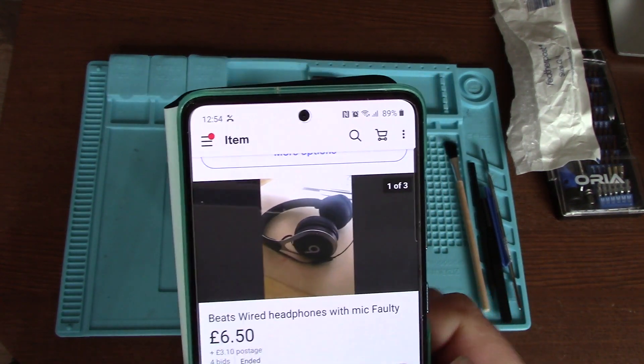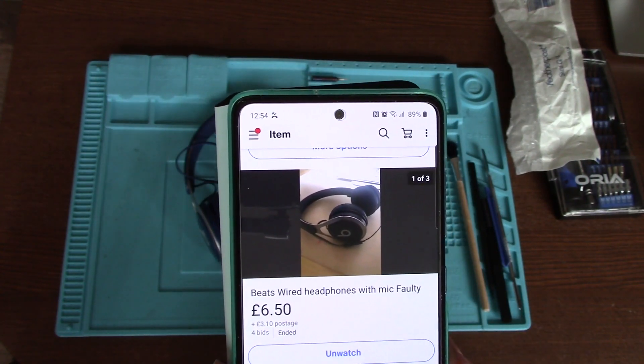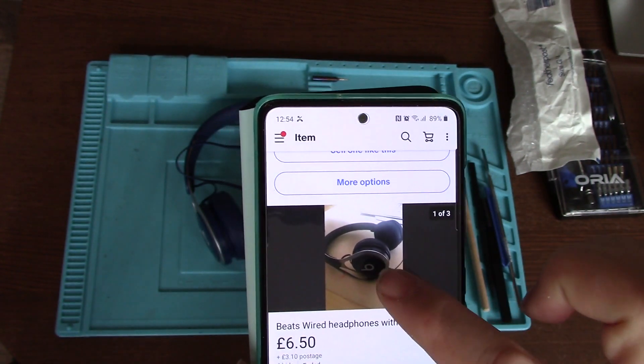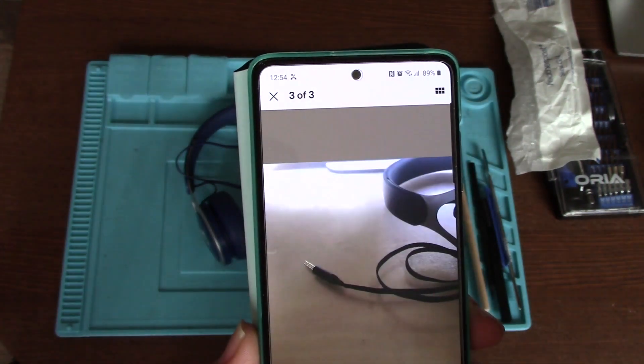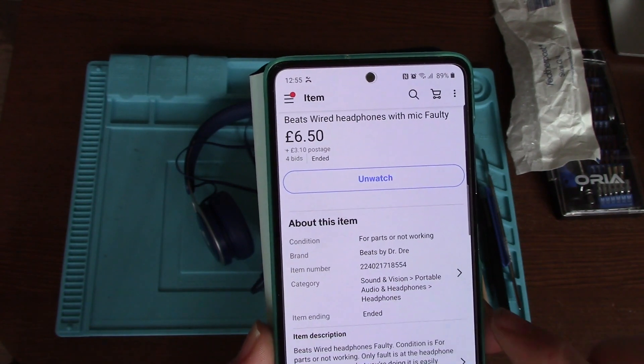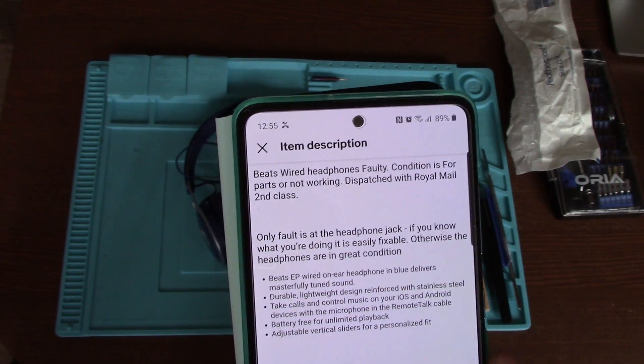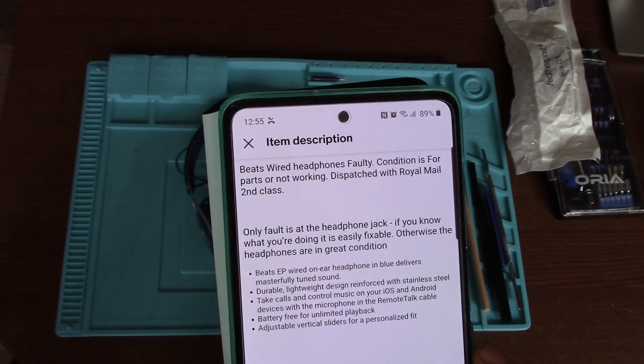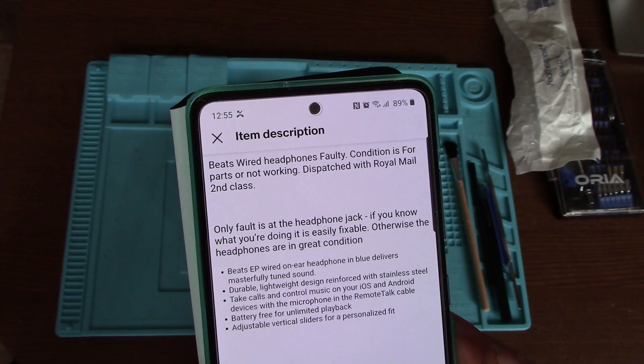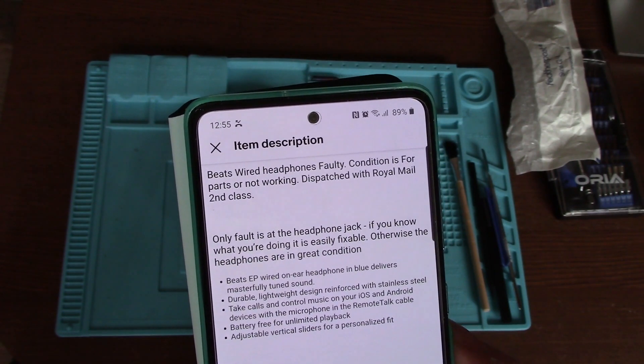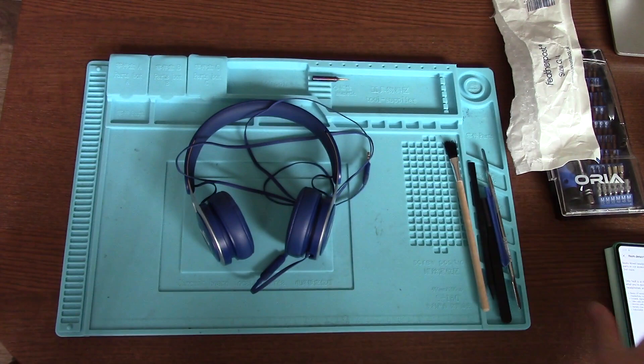So here's the listing. As you can see, I paid £6.50 for them in an auction, described as Beats wired headphones with mic faulty, there's a few pictures. Description says, Beats wired headphones faulty, conditioners for parts are not working, only fault is that their headphone jack, if you know what you're doing it is easily fixable. As I always say, I don't know what I'm doing, but maybe it's easily fixable.